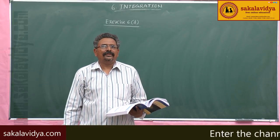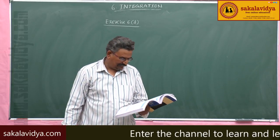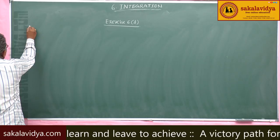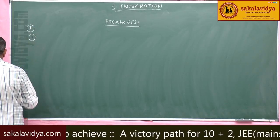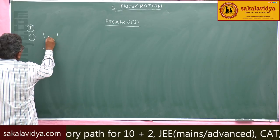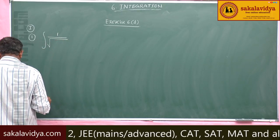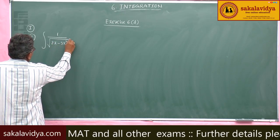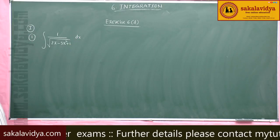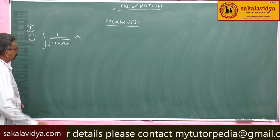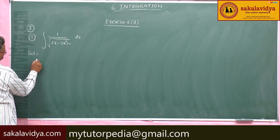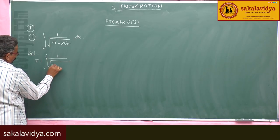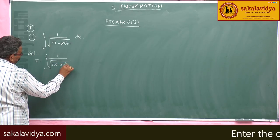Let us solve the problems on exercise 6d, under first section, the first problem. Evaluate integral 1 by root of 2x minus 3x squared plus 1, dx. I is equal to integral 1 by root of 2x minus 3x squared plus 1, dx.